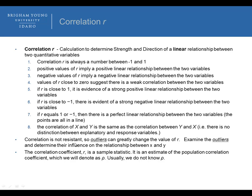However, correlation is not resistant, so outliers can greatly change the value of R. If you see outliers, you can examine their influence on the relationship between x and y. For instance, if you have one or two outliers, you can pull those out just to see how much your R changes. The last point is that the correlation coefficient R is a sample statistic — it is an estimate of the population correlation coefficient, which we denote as rho. We usually do not know rho, but we estimate it with R, just like we estimate mu, the population mean, with our sample mean x-bar.